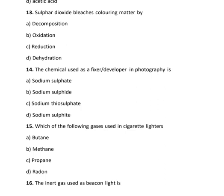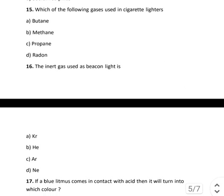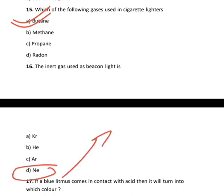The chemical used as a fixer in photography is sodium thiosulphate. Which gas is used in beacon lights? The inert gas used is neon.